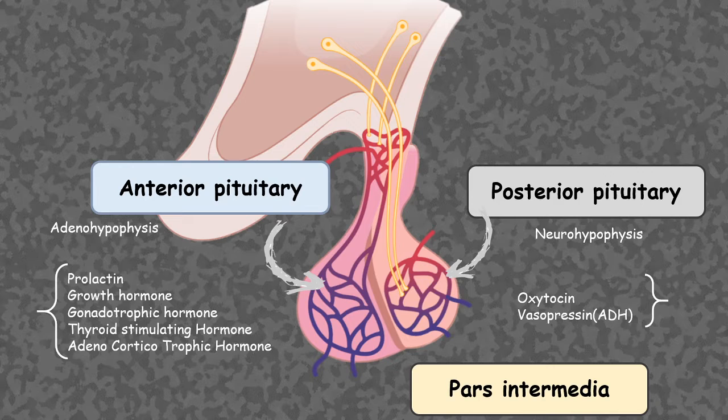The pars intermedia is underdeveloped in the case of higher primates, but in lower animals this structure is bigger.